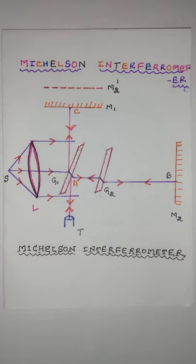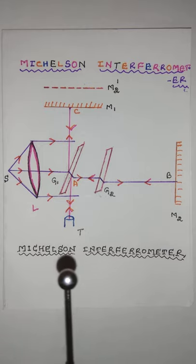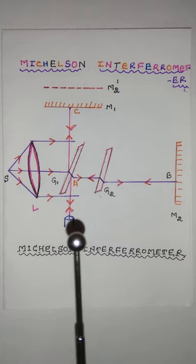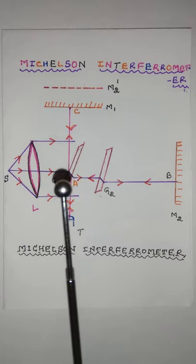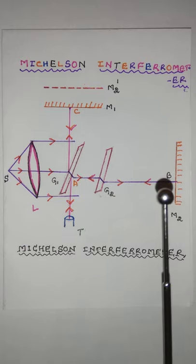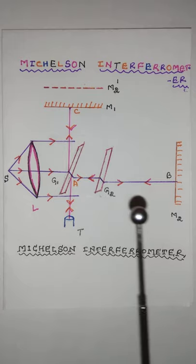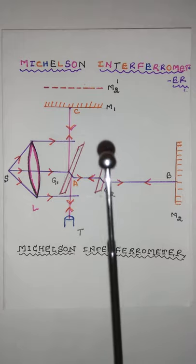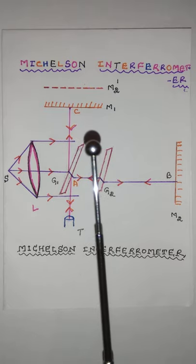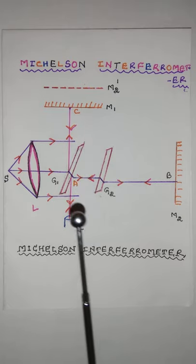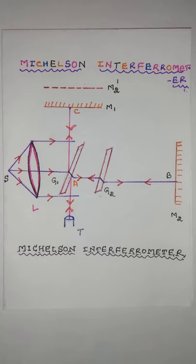Now, the light from the source is rendered parallel by a lens L, falls on the glass plate G1 at an angle 45 degrees. At the backside of G1 it is partly reflected along AC and partly transmitted along AB. The reflected beam moves towards mirror M1, falls normally on it and is reflected back along the same path and emerges out along AT.